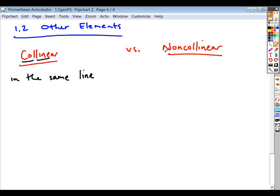Whereas non-collinear, exactly the same, non- within the same line, so non-collinear points are not contained in the same line.